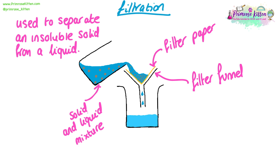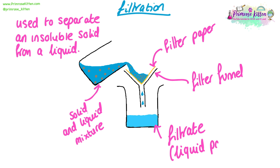The liquid passes straight through the paper, through the funnel, and into the beaker. We are left with the filtrate in the beaker — the liquid part that has passed through the filter paper. Filtration only works with an insoluble solid and liquid mixture; it would not work if the solid was soluble or could dissolve in the liquid. For example, sugar dissolved in water would not be suitable for filtration.